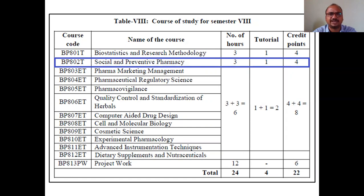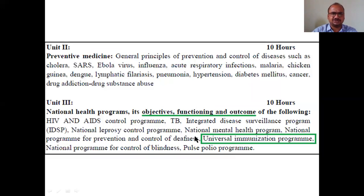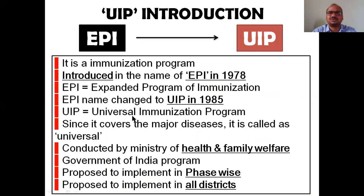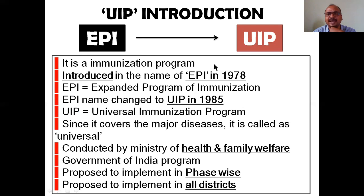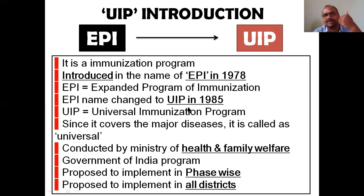This is a concept covering objectives, functioning, and outcomes of the Universal Immunization Program along with Mission Indradhanush. For UIP introduction: it was first established as EPI - Expanded Programme of Immunization - in 1978. The name EPI was then changed to UIP - Universal Immunization Program - in 1985. These years are important to remember for examinations.